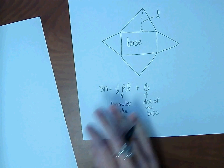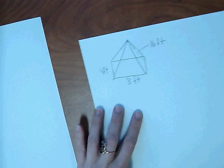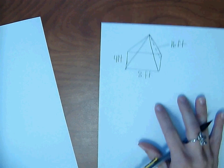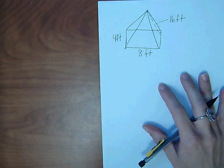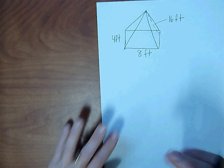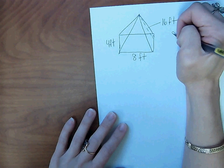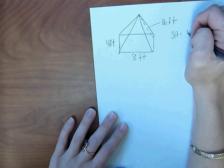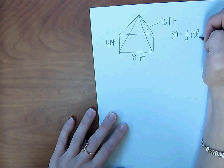All right, so let's go ahead and find surface area of this pyramid. So write your formula. Surface area equals one-half PL plus big B.